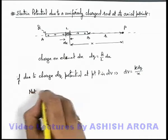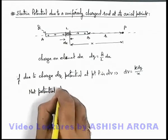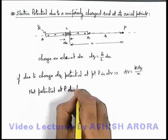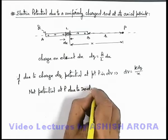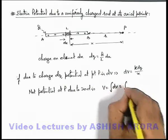And now we can calculate the net potential at p due to the rod. This v can be written as integration of dv, which is integration of k dq.